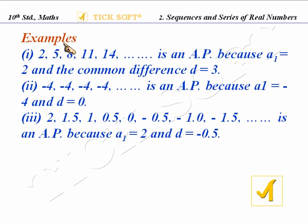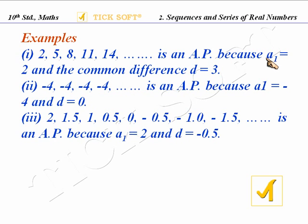For example, 2, 5, 8, 11, 14 is an AP. Here a1, that is the first term, equals 2, and the common difference d equals 3.